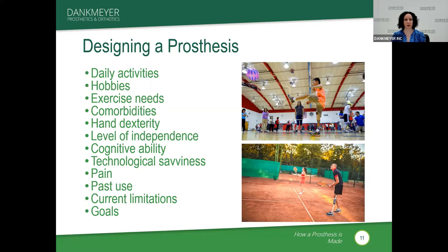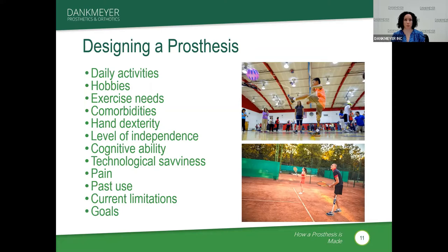What's their cognitive ability like? That comes into play with more complicated devices that have microprocessors or require considerable maintenance. Technological savviness also matters — if someone doesn't like plugging in their cell phone every night, they might not be a great candidate for a microprocessor knee that needs to be charged nightly. What's their pain level? We're also very concerned about their past use of prostheses — what worked, what didn't, what their goals are. All these things come together to make that specific prosthesis for the individual.